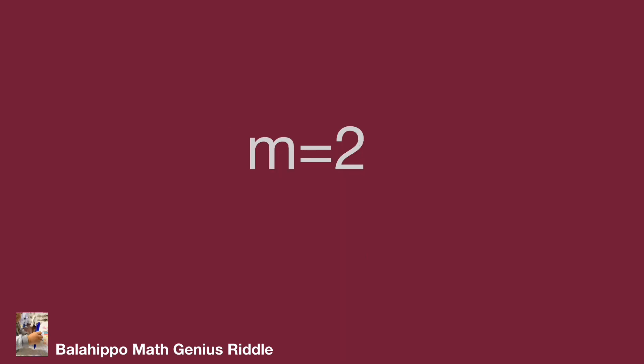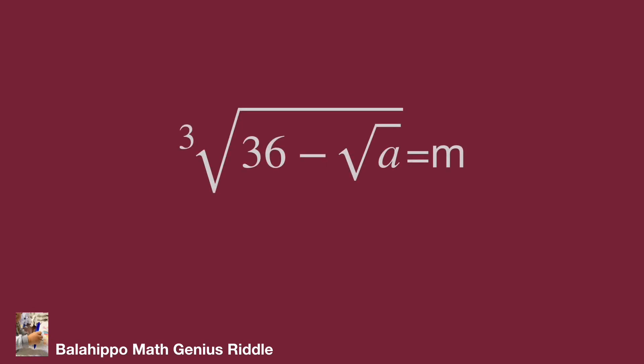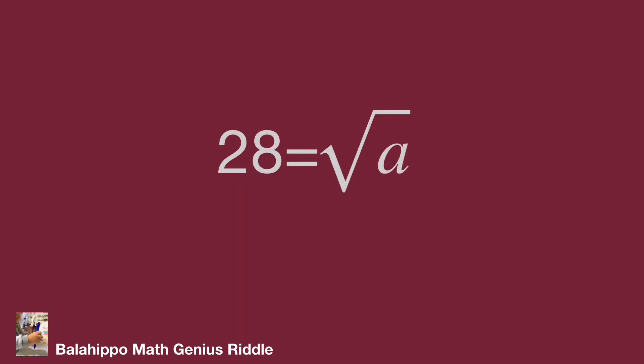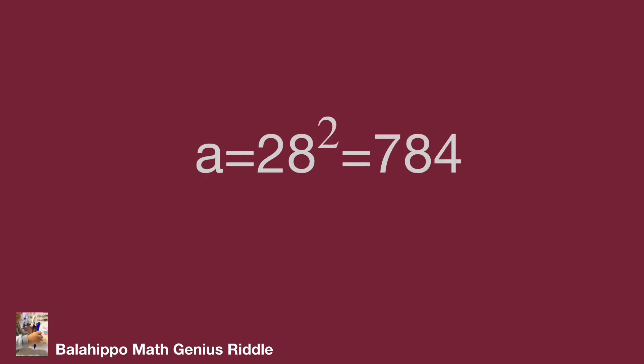While m equals 2, substitute m by 2 into cube root of 36 minus a squared: cube root of 36 minus a squared equals 2. Cubing both sides gives 36 minus a squared equals 8, so a squared equals 28. Therefore a equals square root of 28, which equals 2 times square root of 7, approximately 5.29. That is the only valid answer.